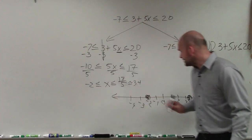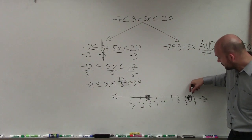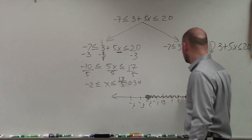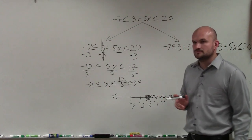And then what are the values that are between -2 and 3.4? Those values are 2, 1, 0, -1. So you shade in between, all right?